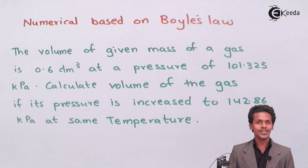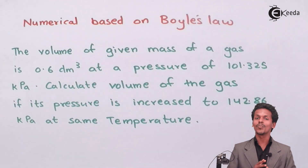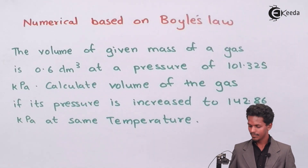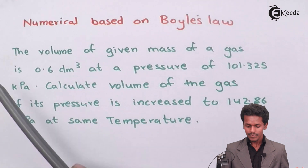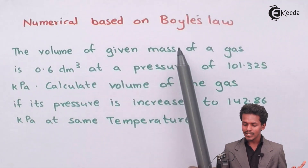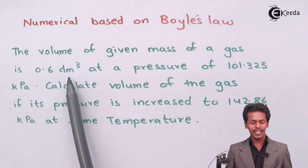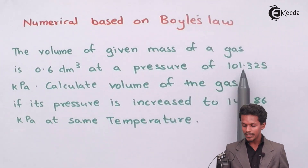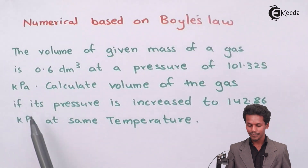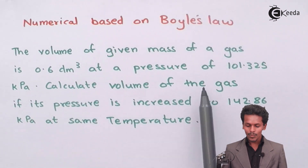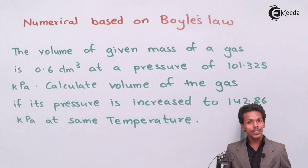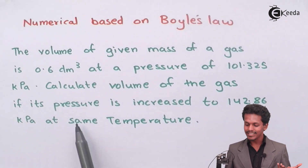As mentioned on our screen, this is a numerical which is based on Boyle's Law. So let us see the question and find out what they are asking for. The volume of the given mass of the gas is 0.6 dm³ at a pressure of 101.325 kilopascal. We have to calculate the volume of the gas if its pressure is increased to 142.86 kilopascal at the same temperature.